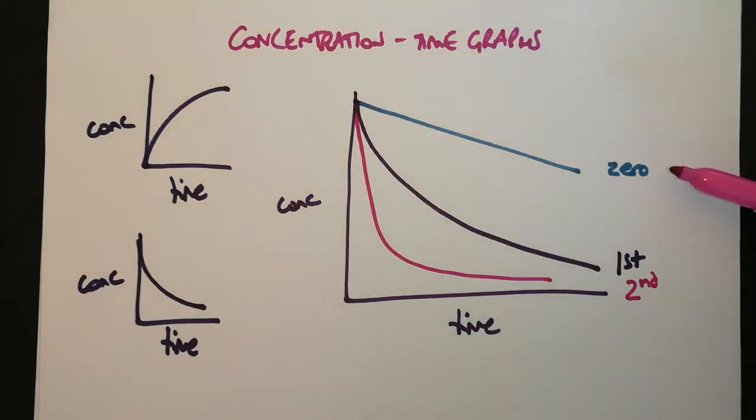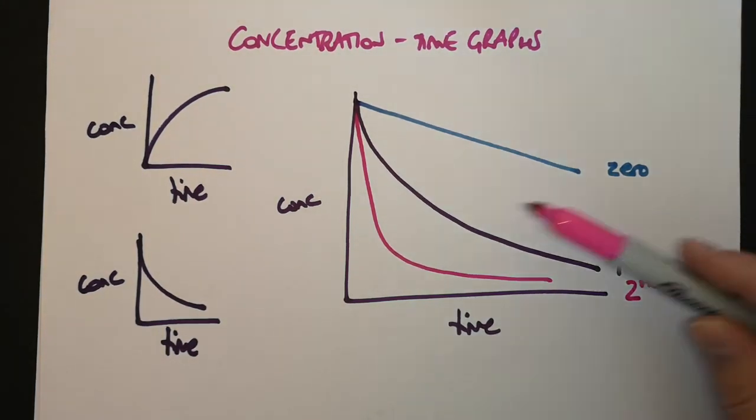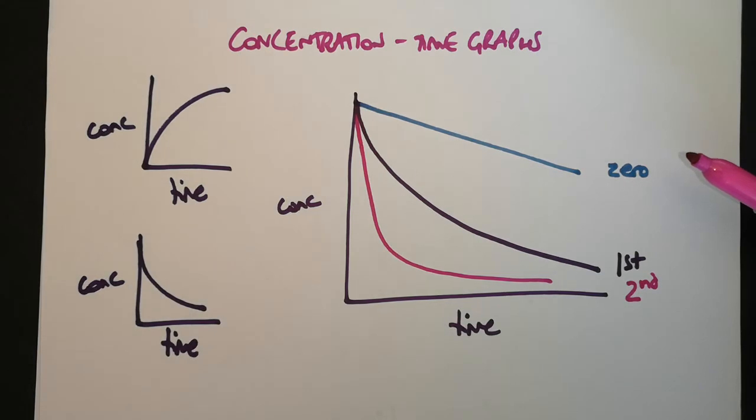The exam board are likely to ask you about a zero or a first-order using concentration-time graphs, so you should be able to recognize that a zero-order reagent has a linear relationship with a concentration-time graph, and a first-order has what we call this exponential decay curve.